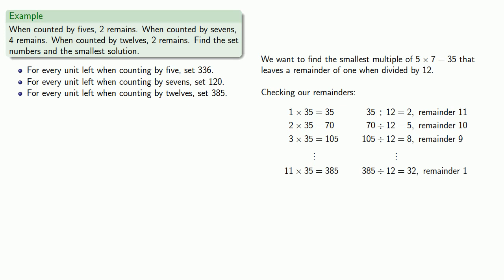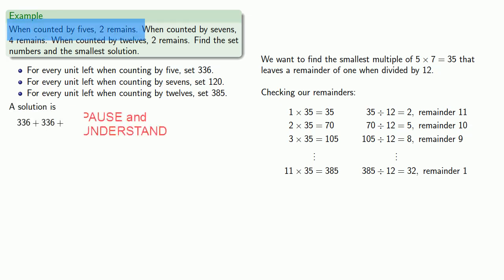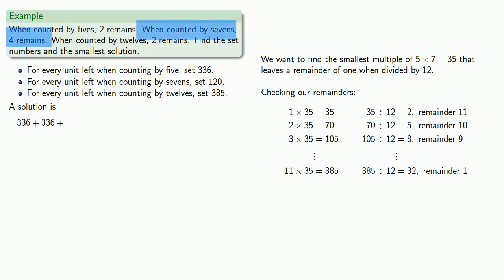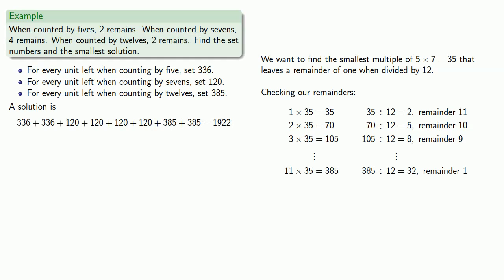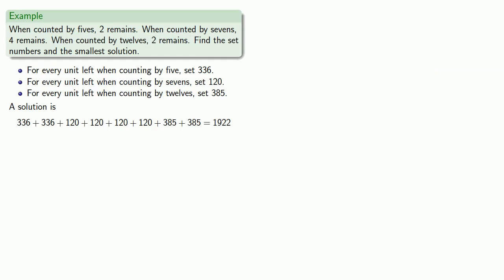When counting by fives, two remain, so set down three hundred thirty-six twice. When counting by sevens, four remain, so set down one hundred twenty four times. And when counting by twelves, two remain, so set down three hundred eighty-five twice. Add them up, and we can reduce by five times seven times twelve — four hundred twenty — to get smaller solutions. Our smallest solution is two hundred forty-two.